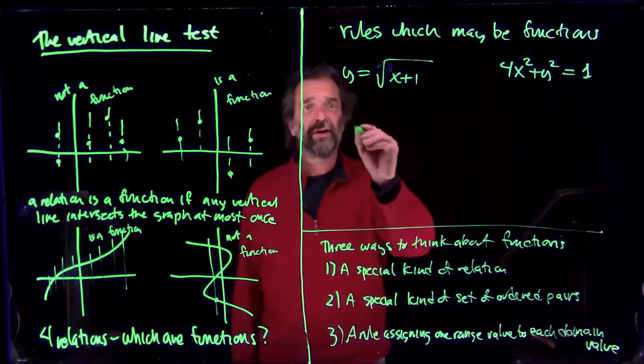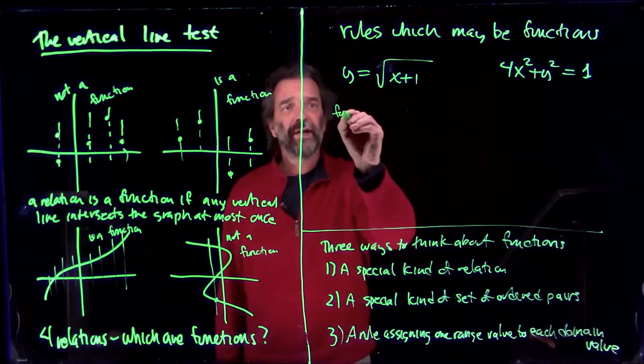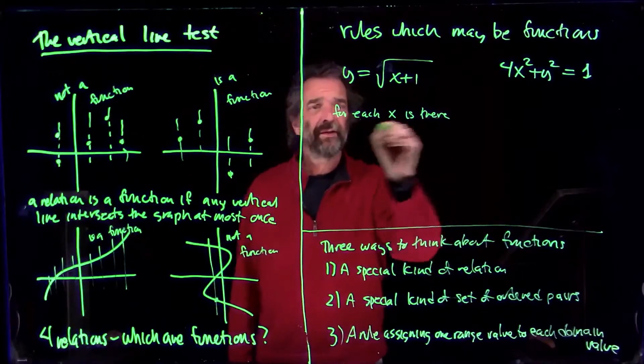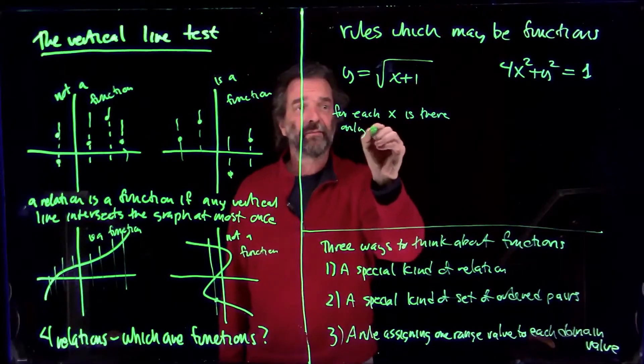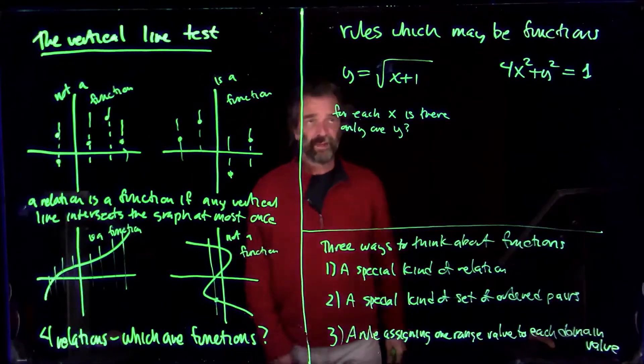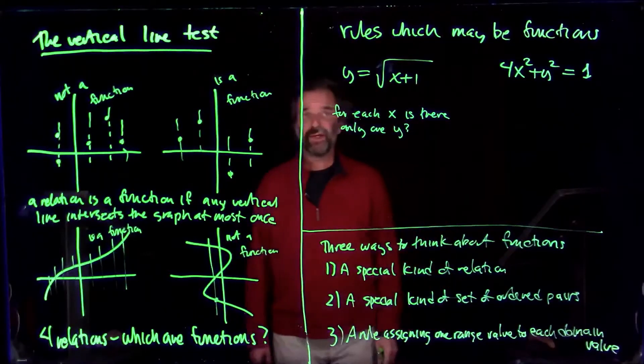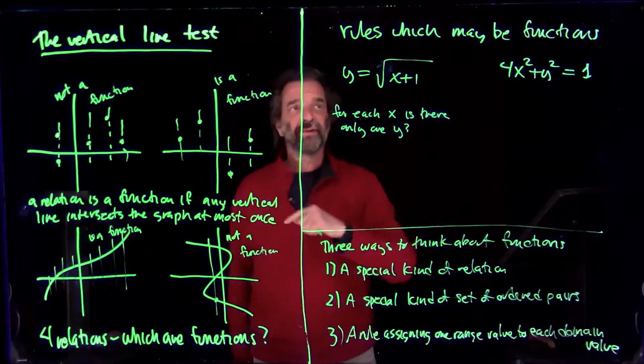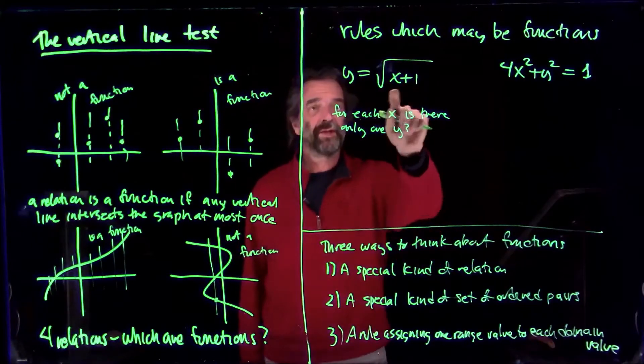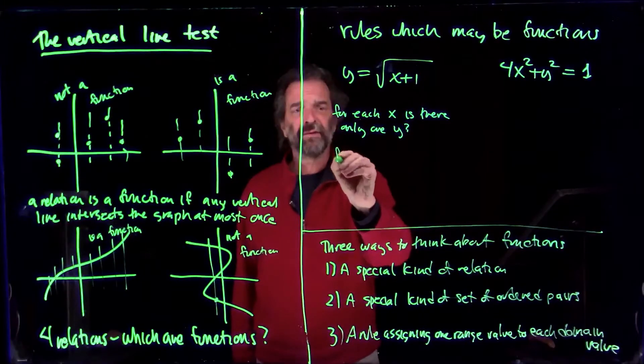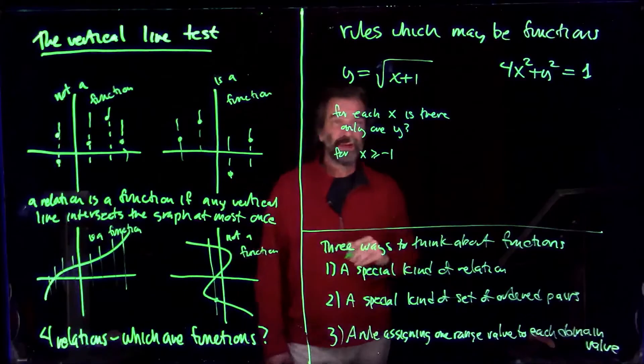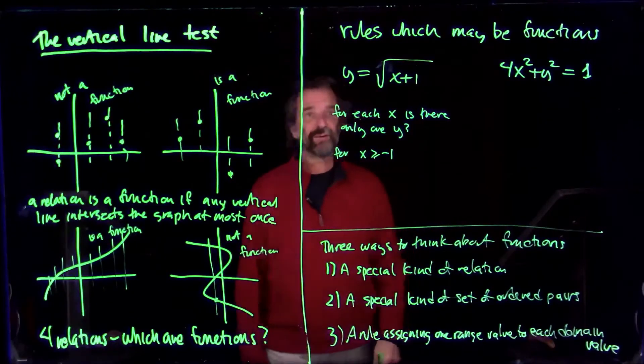So we need to know, for each x, is there only one y? So the x has to be in the relation. So here, for having a relation with an x in it, you have to be able to take the square root of x plus one. So for x bigger than or equal to minus one, which makes x plus one at least zero, so you can take the square root.